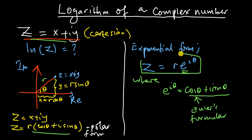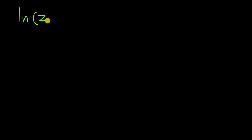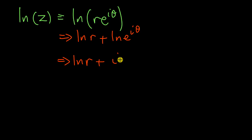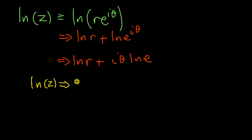Now let's use the exponential form to calculate the logarithm of the complex number. The natural log of z equals the natural log of r times e to the i theta. Using the properties of logarithms, this is the same as natural log of r plus natural log of e to the i theta, which equals natural log of r plus i theta times natural log of e. Since the natural log of e is 1, we get natural log of z equals natural log of r plus i theta.